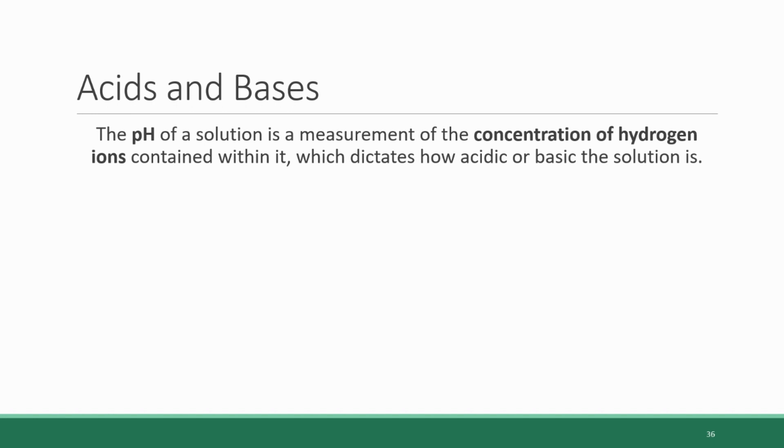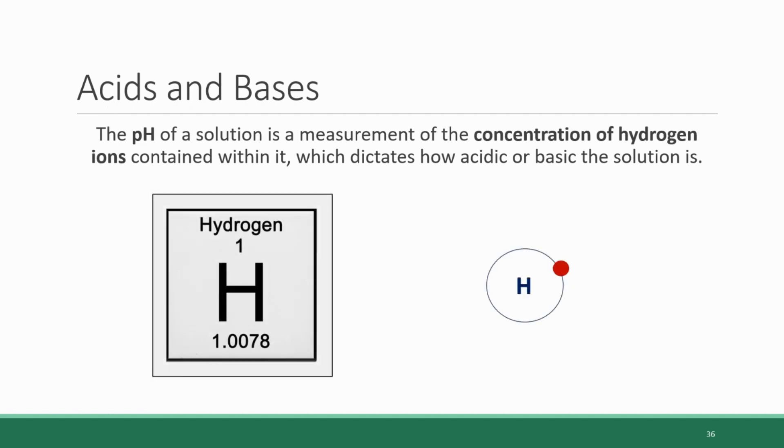But when we say hydrogen ions, what are we actually talking about? An ion is an atom that has an electric charge from having gained or lost an electron. Hydrogen is the smallest and simplest element in existence. You can see from its square extracted from the periodic table that the number at the top indicates it has one single proton in its nucleus and one electron in its orbital. A hydrogen atom becomes an ion when it loses that electron and gives it away to another atom.